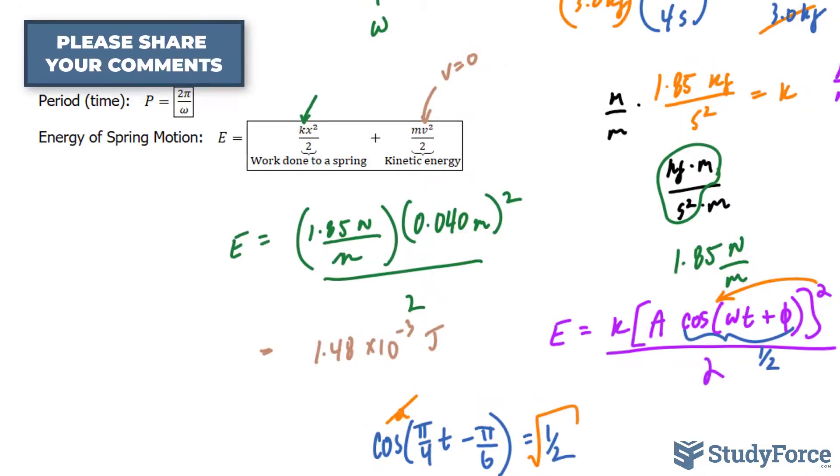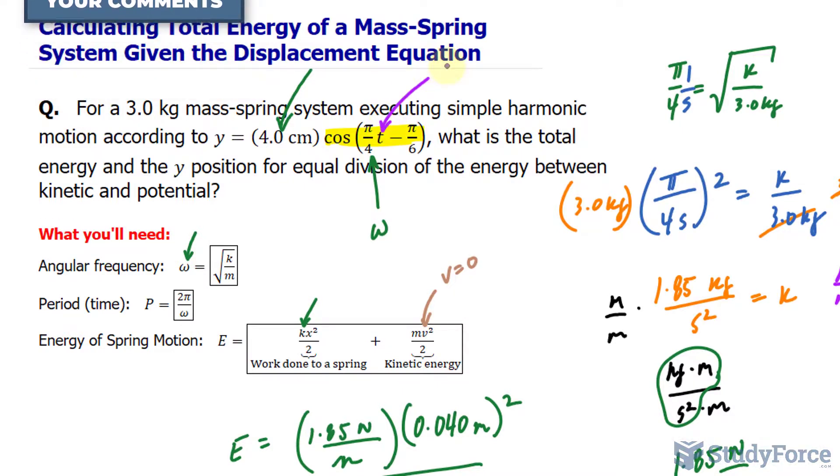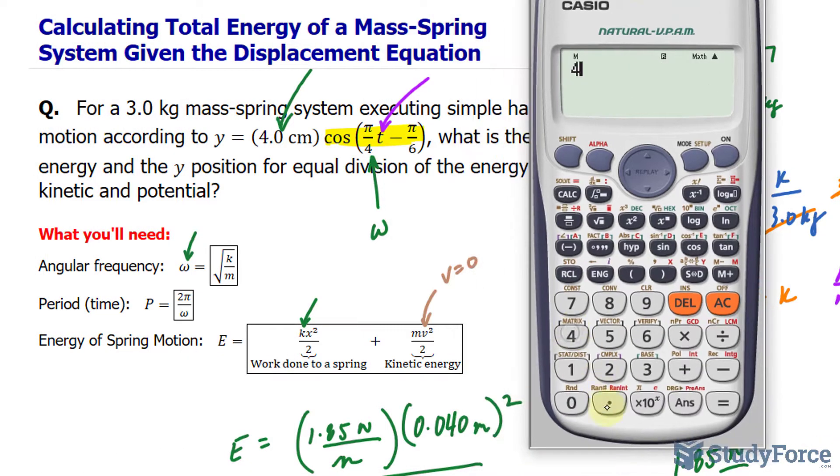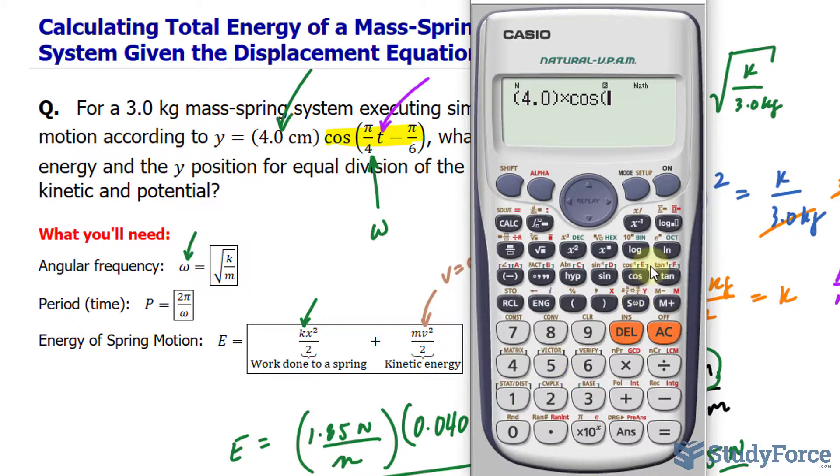Using that value alone, we can now plug it back into here, and we should end up with the position of y when the energies are equal. So I have 4.0 times cosine, and be very careful here because you will make mistakes if you don't put enough brackets everywhere. So I put a bracket around that first factor, bracket around 5 over 3 minus bracket π/6.